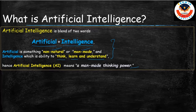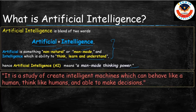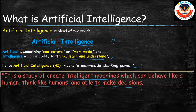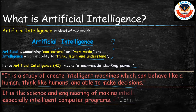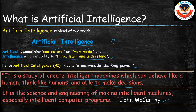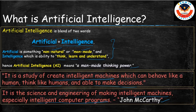There are many definitions of AI. In simple words, one definition is: it is a study of creating intelligent machines which can behave like humans, think like humans, and be able to make decisions. There is one more definition given by John McCarthy, a great scientist. He says it is a science and engineering of making intelligent machines, especially intelligent computer programs — to make a system intelligent. That is what artificial intelligence is.